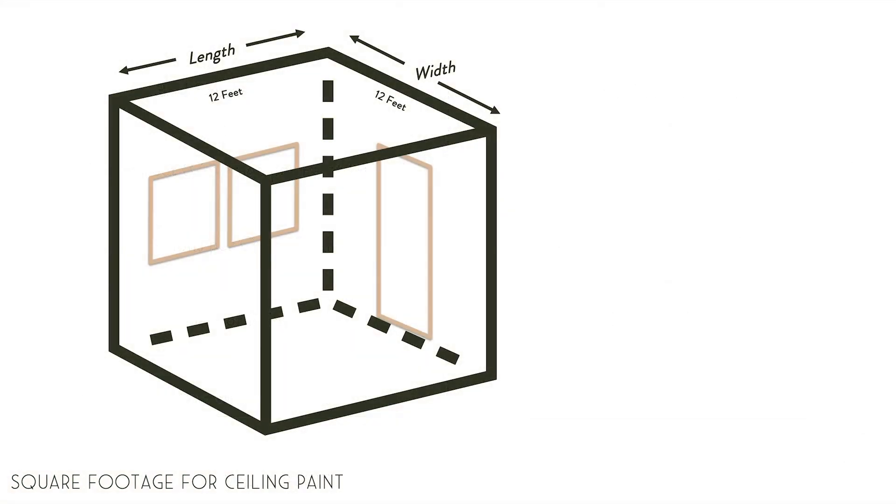One more thing, for ceiling paint, the floor and the ceiling should have the same calculation since they usually are mirror images of one another. We'll go back to our 12 by 12 room example, where you would need enough ceiling paint to cover the 144 square feet for that single coat.